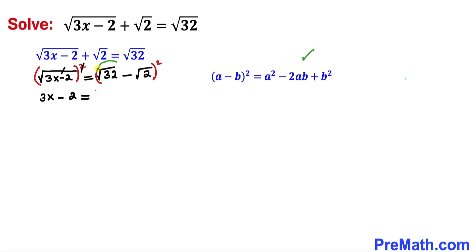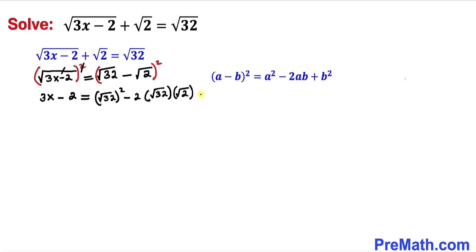We are going to apply this identity on the right hand side. So the right hand side becomes: square root of 32 whole squared, minus 2 times square root of 32 times square root of 2, plus square root of 2 whole squared. Now let's go ahead and simplify the right hand side.